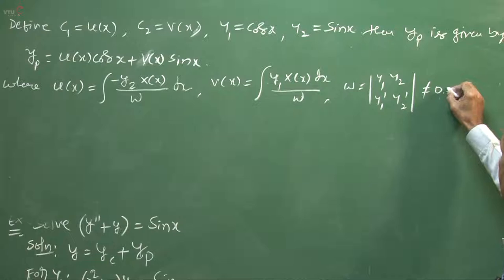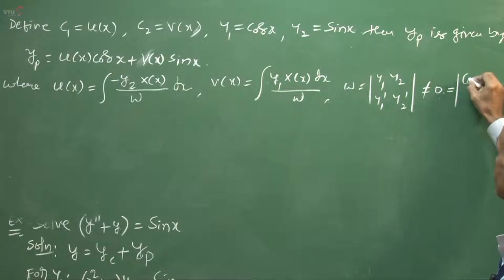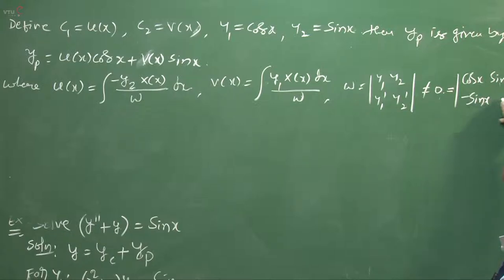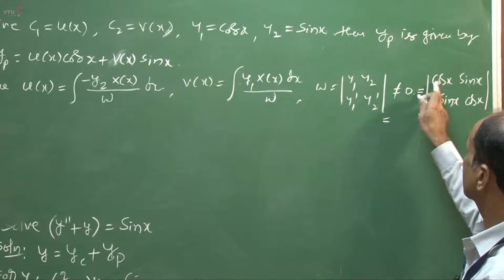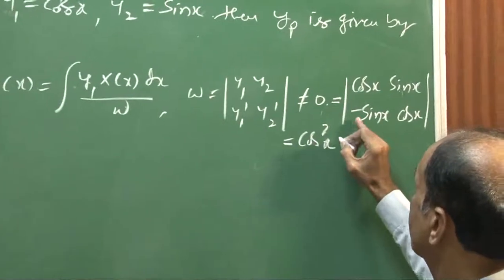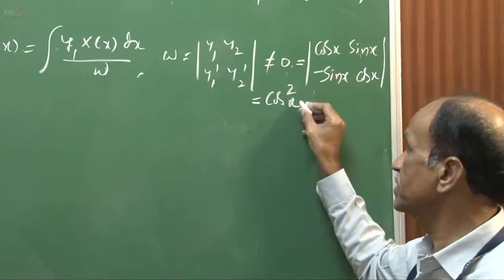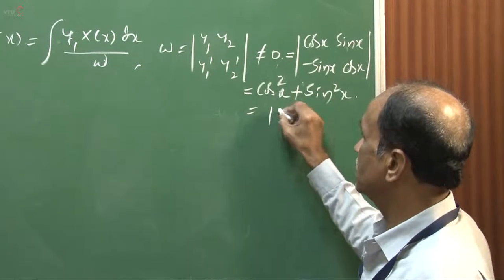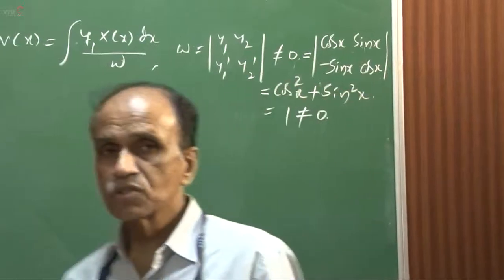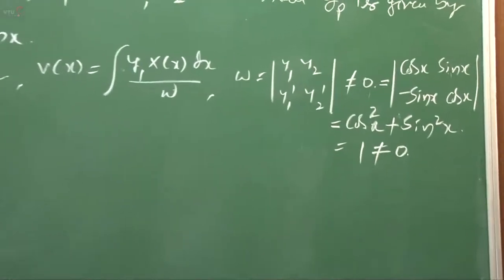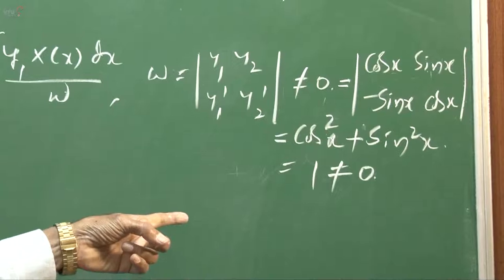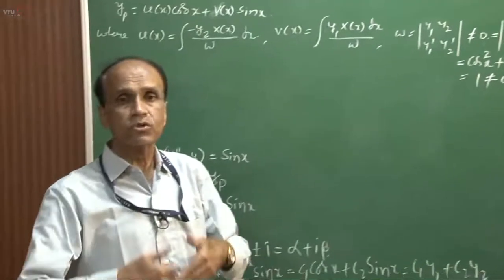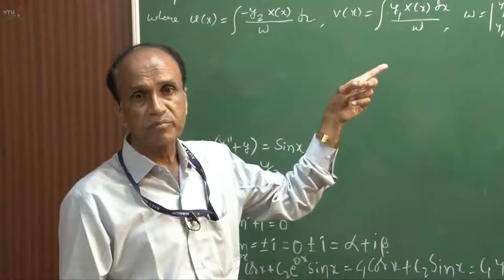The Wronskian W is computed as the determinant: cos x, sin x in the first row and minus sin x, cos x in the second row. Simplification gives cos squared x plus sin squared x, which equals 1, and that is not equal to zero. Therefore, we are permitted to proceed to the next step since the Wronskian equals 1, not zero.